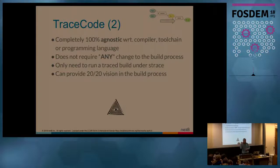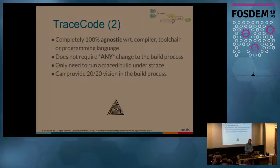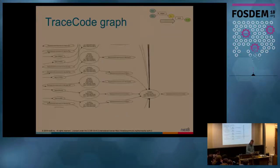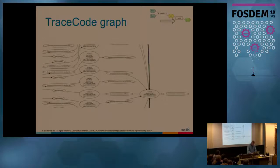They use a similar technique to collect during a test run which files are being touched, and they've implemented a dtrace tracer and a Windows-based tracer. This really provides a clear vision into the build process - what tools were used, what executables were spawned, what files were read and written to, and in which order. So let's look at some fun stuff. It's a graph, so you can pass it to dot and graph it.